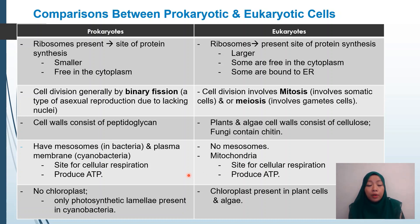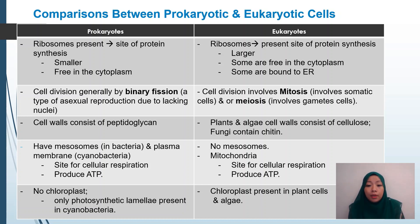Since prokaryotes do not have mitochondria, they have mesosome, which can be found in bacteria, and plasma membrane lamellae in cyanobacteria — these are the sites for cellular respiration and ATP production. Since eukaryotes do not have mesosome, they have mitochondria as the site for cellular respiration and ATP production. There are no chloroplasts in prokaryotes; however, cyanobacteria have photosynthetic lamella. In eukaryotic cells, chloroplasts are present in plants and algae.